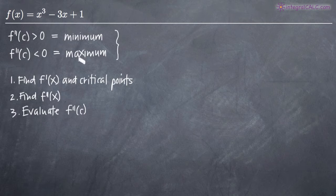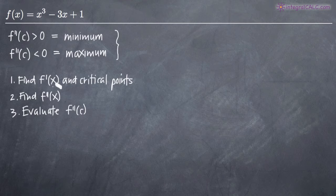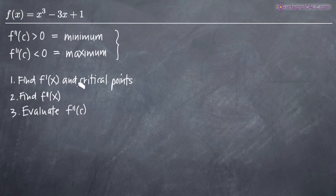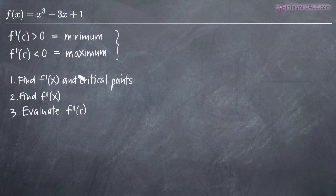To use the second derivative test to evaluate the critical points, we follow three steps: find the first derivative f'(x) and then the critical points, then find the second derivative f''(x), and then plug our critical points into the second derivative to categorize or define the nature of each of our critical points.